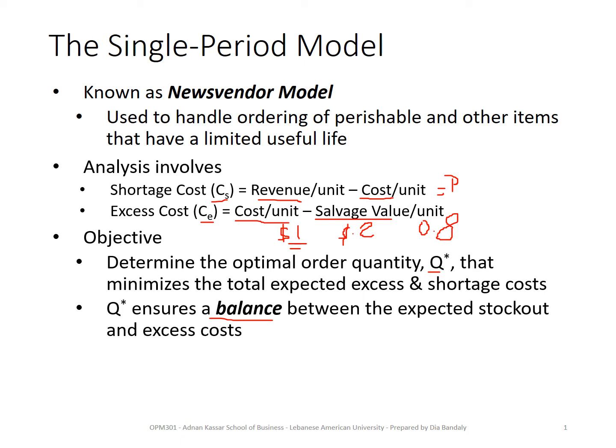This balance is not easy to find. Why? Because the unit shortage cost and excess costs are not the same, and the probability of having a shortage and the probability of excess are not straightforward. That's why we run what we call an incremental analysis.